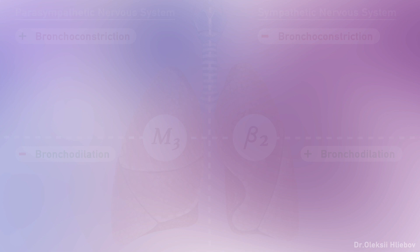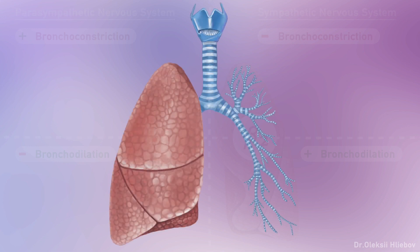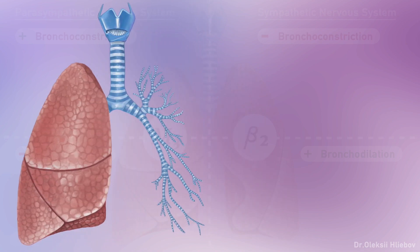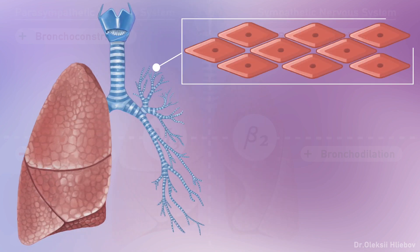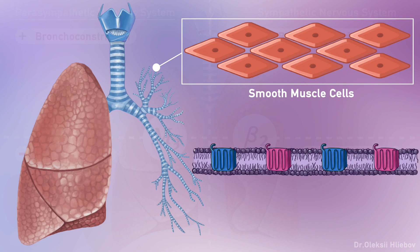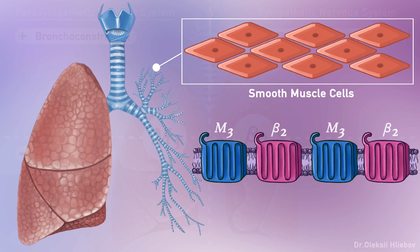We should keep in mind, as we are talking about bronchodilation and bronchoconstriction, we are assuming contraction and relaxation of smooth muscle cells in the bronchial tree. M3 receptors and beta-2 receptors are present on the cell membrane of these smooth muscle cells in all conducting airways from the trachea to the bronchioles.